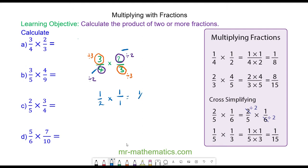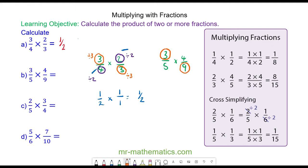So we have one half. The next question is three fifths multiplied by four ninths. We're going to cross-simplify, which means we can divide this numerator and this denominator by three, because three goes into three and nine.